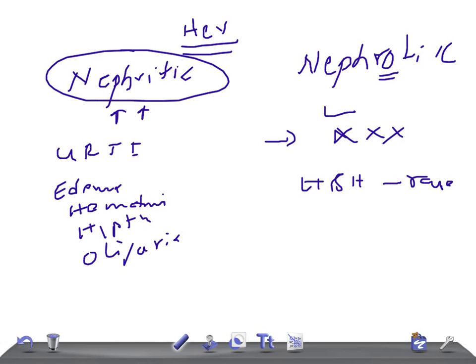If you talk about CBC, the hemoglobin decreases due to hemodilution in nephritic syndrome whereas in nephrotic syndrome, hemoglobin is raised due to hemoconcentration.